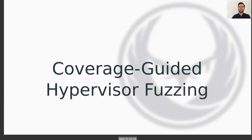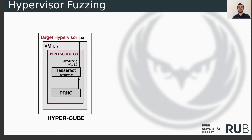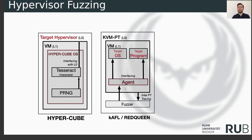For coverage-guided hypervisor fuzzing — to recap, this is the setup used for HyperCube. The target is the hypervisor running at host level. Inside the virtual machine, level one runs HyperCubeOS. HyperCubeOS will start to interface with the target hypervisor, which is basically fuzzing. On the other hand, there is KFI Red Queen. At L2, there is a hypervisor called KVMPT — but this is not the target. This hypervisor is used to get information about what is happening inside the virtual machine. Inside the virtual machine, there is a target operating system or target program — whether it's an OS component or user-space application. A special component called the agent expects data from the fuzzer running outside and passes the fuzz payload to the target itself.